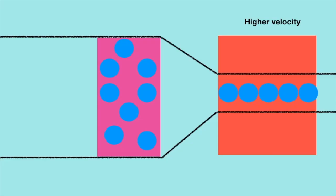What Bernoulli realized was that the changing velocities of a stream of fluid — gas or liquid — causes a change in pressure of that gas or liquid. More specifically, at the constriction zone, the higher velocity of our air causes a lower pressure compared to the pressure in the wider section. The higher the air's velocity, the lower its pressure, and vice versa.